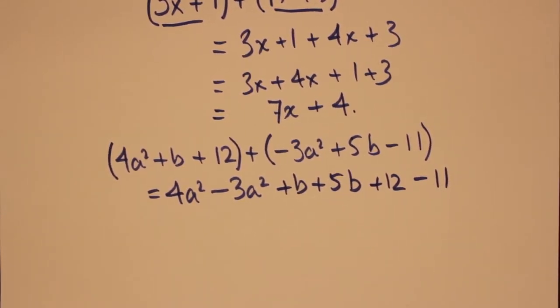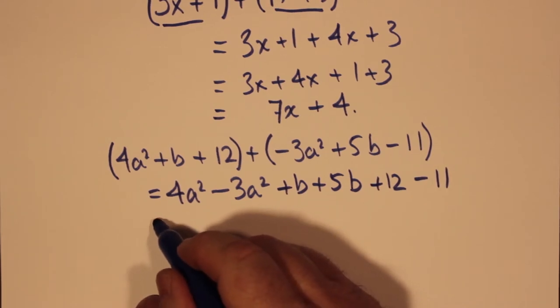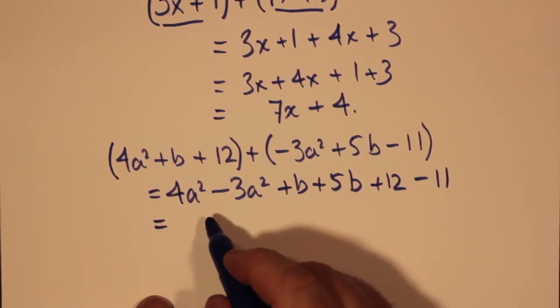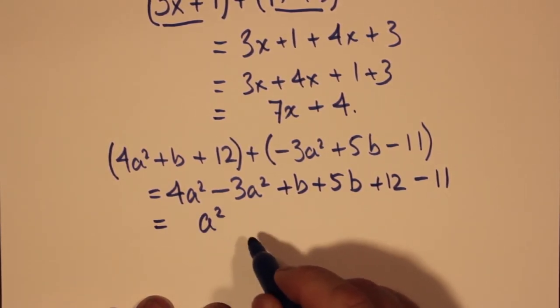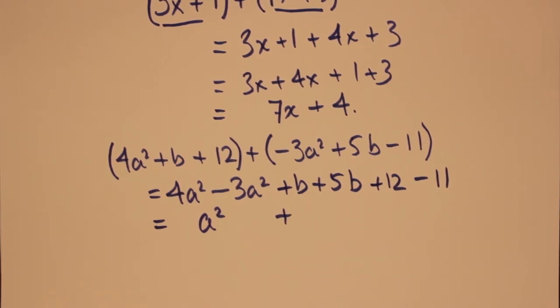So we have 4a squared minus 3a squared, and the rest of that polynomial is plus b plus 5b plus 12 minus 11. And once we gather our like terms,